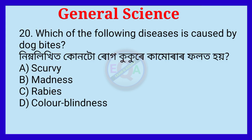Question number twenty. Which of the following diseases is caused by dog bites? The correct option is Option C: Rabies.